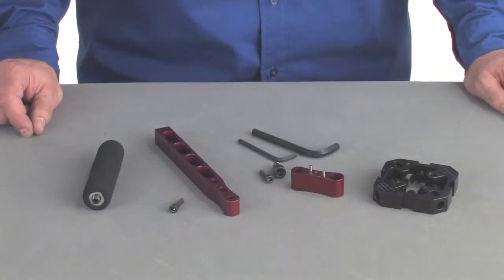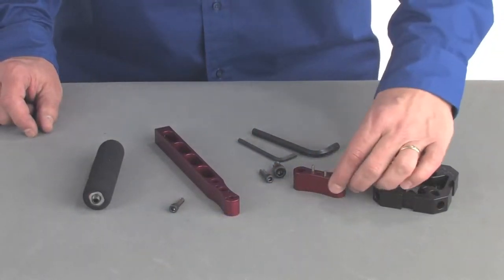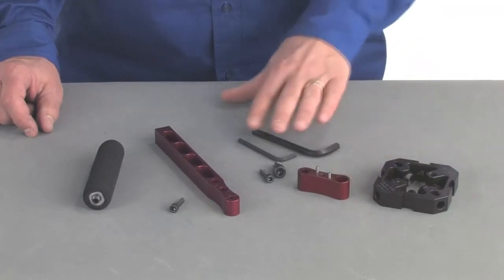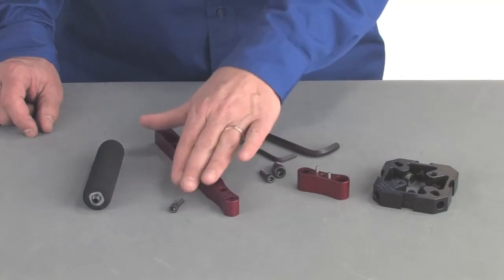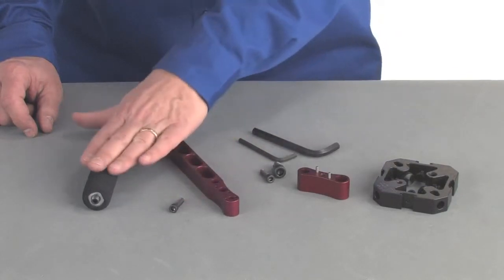In the handle kit, we get your adapter, two allen keys, a three-eighths bolt, a quarter-twenty bolt, your handle, another quarter-twenty bolt, and the padded grip.